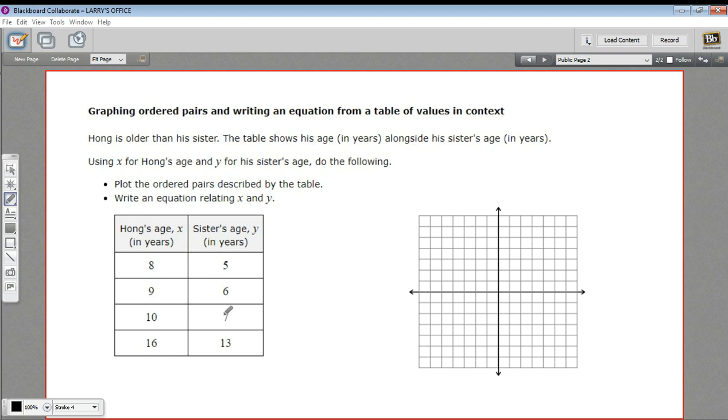When you have ordered pairs like this, you can graph them. They're all ready to be graphed. What they want us to do here is graph this and then write an equation that relates the two. Let's do the graphing first.